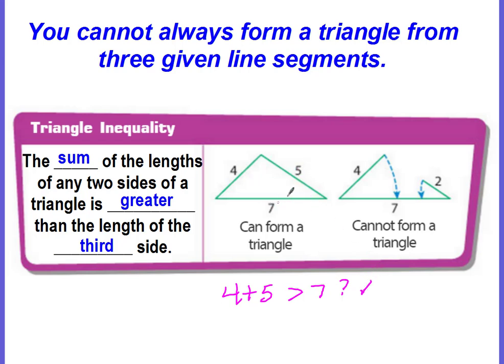But now we have to try the other combinations as well. So if we do 5 plus 7, is that greater than the third length of 4? 5 plus 7 is 12, that is greater than 4. Now let's try our last combination.